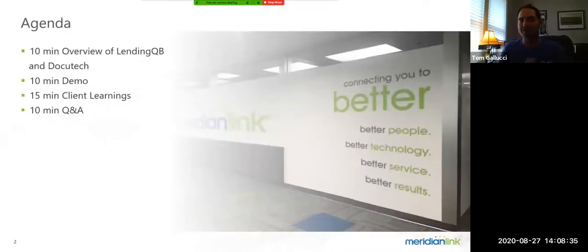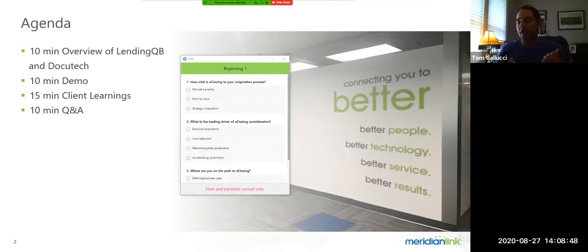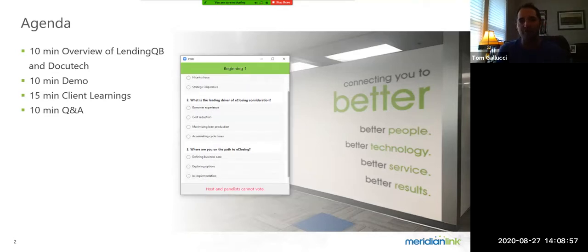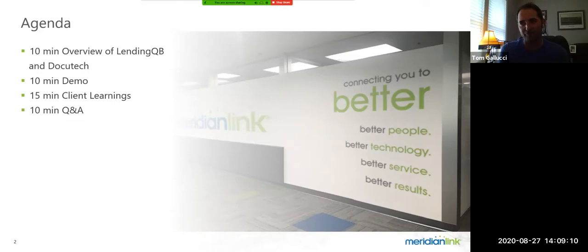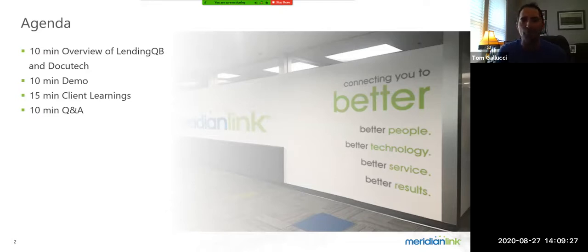Before we dive in, we've got a couple of polling questions we'd love responses from our attendees. Please go ahead and respond to these three questions. First: how vital is e-closing to your origination process? Options are: not yet a priority, a nice to have option, or a strategic imperative. Second: what is the leading driver of your e-closing consideration? It could be borrower experience, cost reduction, maximizing loan production, or accelerating cycle time. And last: where are you on the path to e-closing? Are you defining your business case, exploring options, currently in implementation, or already actively conducting e-closing? I'll give a moment for attendees to respond.